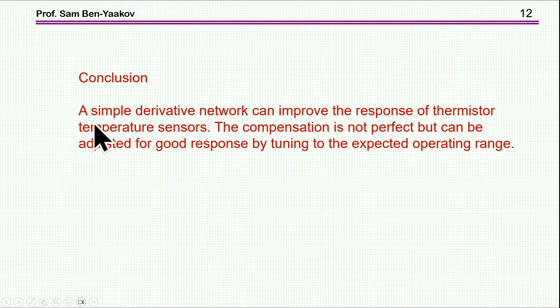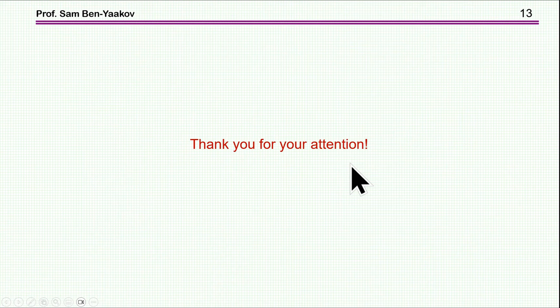So, what is the conclusion here? I think I've shown that a simple derivative network can indeed improve the response of a thermistor temperature sensor. The compensation is not perfect, but can be adjusted for good response by tuning to the expected operating range. This brings me to the end of this presentation. I hope you have found it of interest, and perhaps it will be useful to you in the future. Thank you very much.